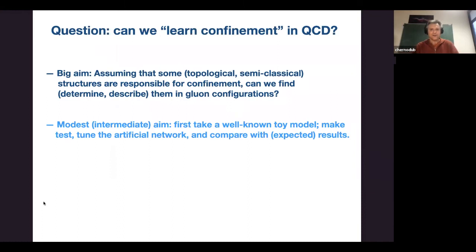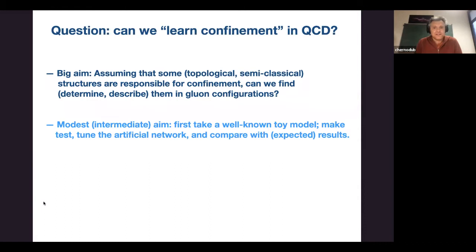Our aim in this work is to learn confinement. Instead of pictures, we will use semi-classical topological configurations produced with Monte Carlo techniques — first-principle simulations of the real vacuum. We will try to understand whether the program can determine what kind of phase we have — confining or deconfining — and then try to understand how the program learns this.